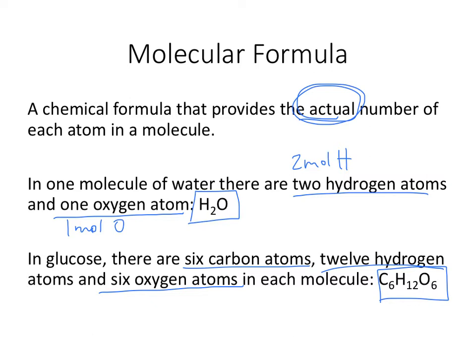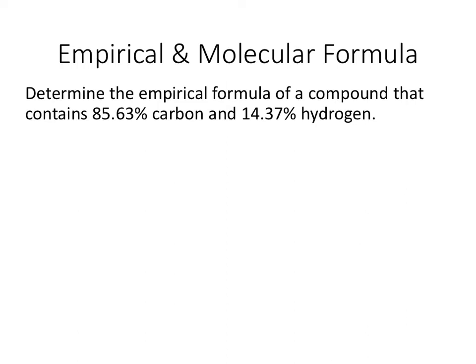Let's try a problem so we can figure out how to find empirical and molecular formulas. This question says, determine the empirical formula of a compound that contains 85.63% carbon and 14.37% hydrogen. Now remember when we were talking about percents, those are usually percents by mass.